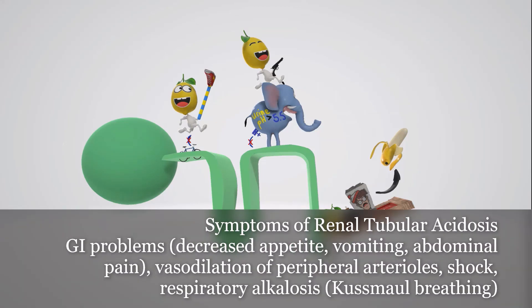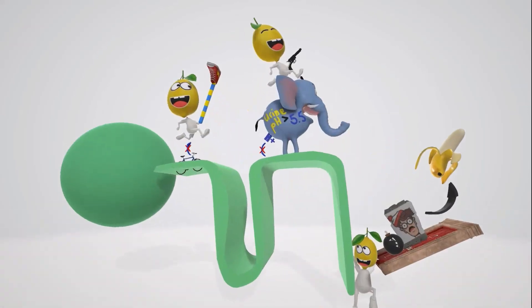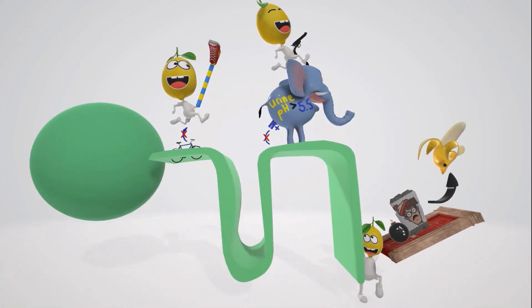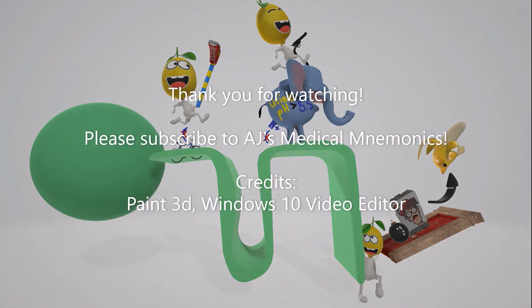To end, general symptoms of RTA initially include GI problems like decreased appetite, vomiting, and abdominal pain. If left untreated, severe metabolic acidosis can lead to vasodilation of peripheral arterioles, causing shock. The body compensates with a respiratory alkalosis seen as Kussmaul breathing, where a person initially takes rapid shallow breaths that become more deep over time.